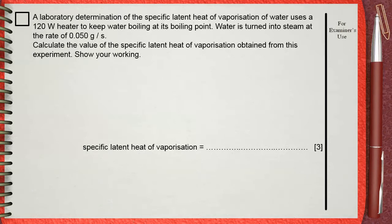A laboratory determination of the specific latent heat of vaporization of water uses a 120 watts heater to keep water boiling at its boiling point. Water is turned into steam at the rate of 0.050 grams per second. Calculate the value of the specific latent heat of vaporization obtained from this experiment. Show your working.